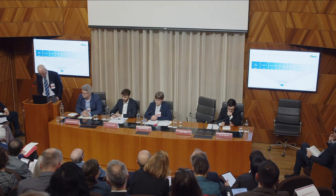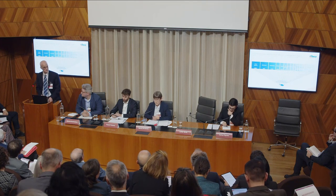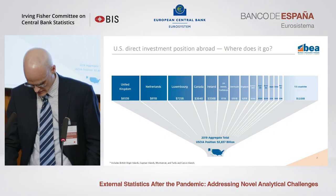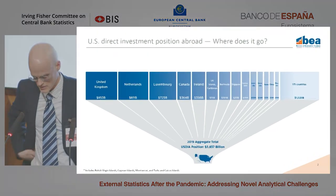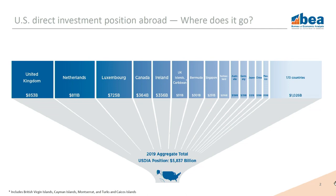The U.S. direct investment position abroad is the value that U.S. multinational enterprises (MNEs) have invested in their foreign affiliates, produced from BEA's quarterly survey. In 2019, the aggregate value of those investments was $5.84 trillion. Direct investment position is recorded in the country where the first or directly owned entity outside the U.S. in the multinational ownership chain is located — in accordance with the IMF's Balance of Payments Manual and the OECD's benchmark definition of direct investment.